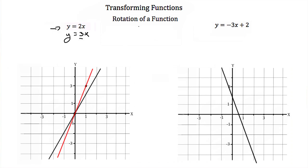Let's try the next one. Here we have y is equal to negative 3x plus 2. Let's change our slope to negative 2x plus 2 and see what the graph looks like. We stay at 2, our y-intercept, and go down 2 and over 1 — that's our rise over run. Notice that our graph continues to rotate around the y-intercept, and all that changes when we change the slope is the steepness.